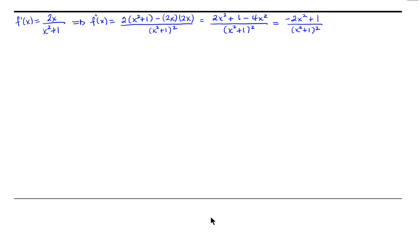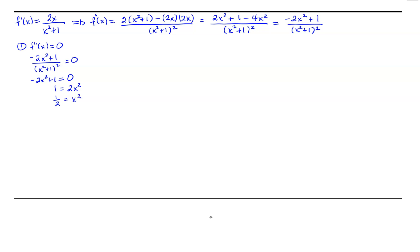Now we consider finding the critical points for this second derivative. The first source is the second derivative equal to 0, which means negative 2x squared plus 1 over (x squared plus 1) squared equals 0. Multiplying both sides by (x squared plus 1) squared gives negative 2x squared plus 1 equals 0, so 1 equals 2x squared, then 1/2 equals x squared, and taking the square root gives x equals plus or minus the square root of 1/2. So we have 2 critical points from setting the second derivative equal to 0.